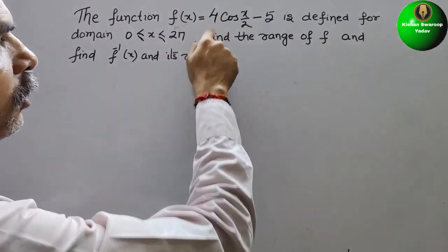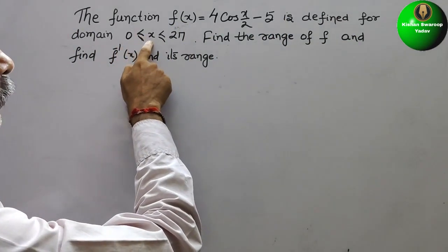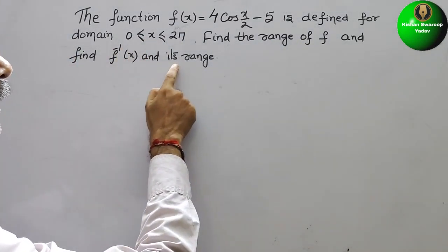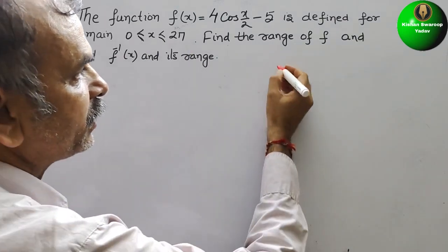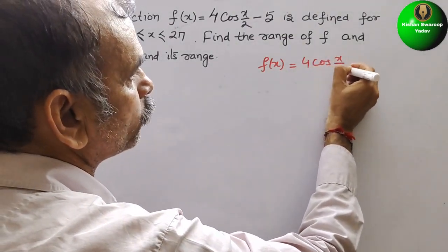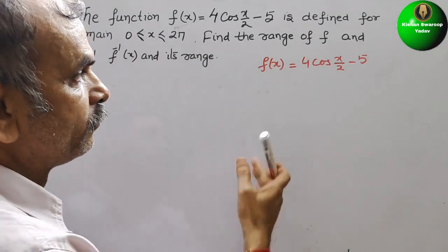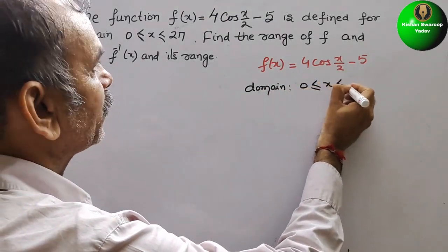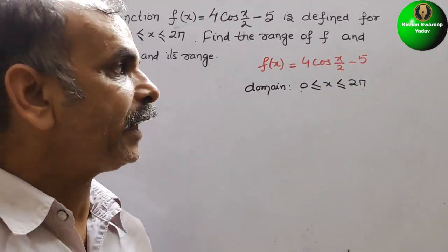The function f(x) is equal to 4cos(x/2) minus 5, defined for domain 0 less than or equal to x less than or equal to 2π. We need to find the range of f, find f inverse of x, and its range. The domain goes from 0 to 2π, that means from 0 to 360 degrees.